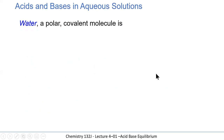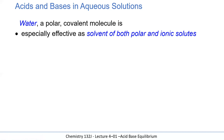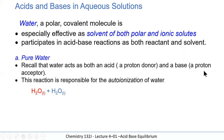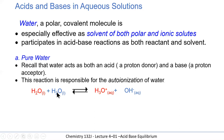Acids and bases in aqueous solution: remember, water is a polar molecule — its angular shape and the disproportionate electron sharing between oxygen and hydrogen make it a particularly good solvent for both polar and ionic substances. Water participates in acid-base reactions as both reactant and solvent, acting as a proton donor and proton acceptor. In the auto-ionization of water, one water molecule accepts a hydrogen from another H₂O. The two water molecules and the hydronium ion and hydroxide form conjugate acid-base pairs, each differing by a single hydrogen.